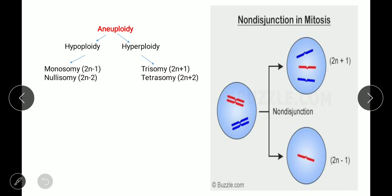Non-disjunction results in an error where one cell has an imbalanced number of chromosomes. There is a chromosomal imbalance, and such a cell is called an aneuploid cell. Aneuploidy means the presence of an abnormal number of chromosomes — either one extra or one less. There are two types: hypoploidy, where chromosomes are reduced, and hyperploidy, including conditions like tetrasomy.